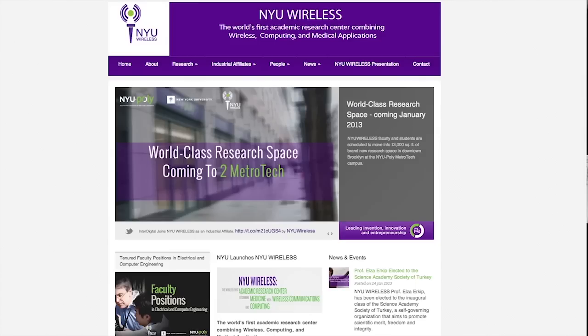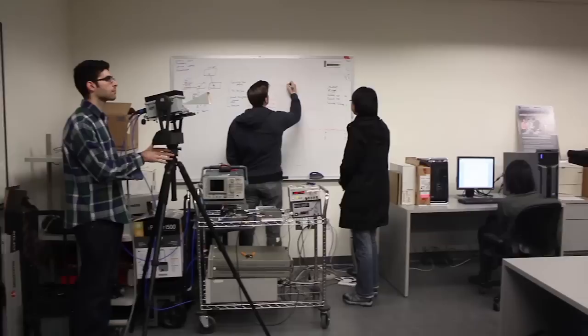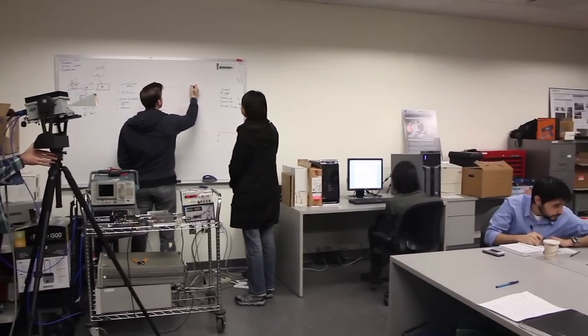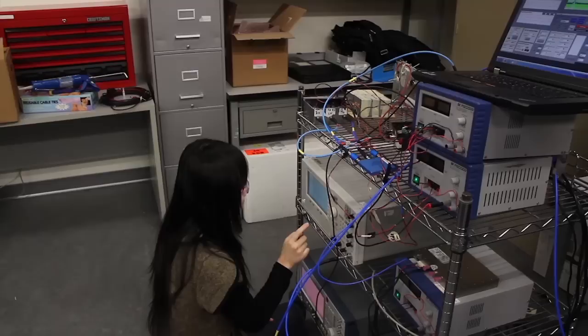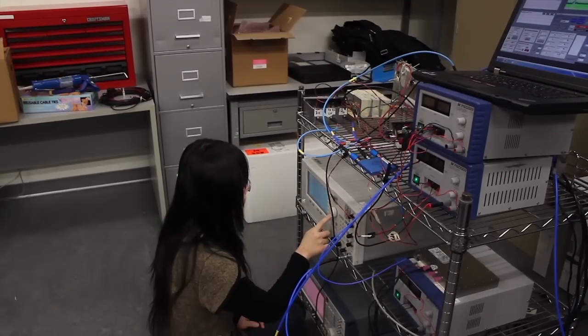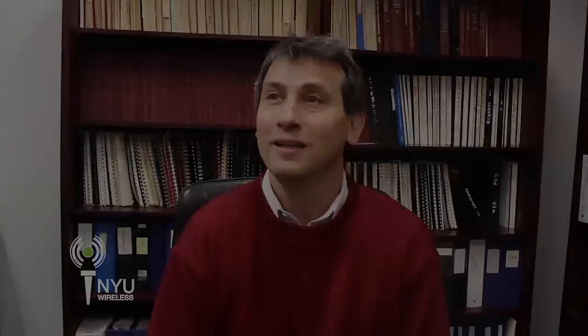NYU Wireless is one of the first academic research centers in the world to characterize the millimeter wave frequencies of 28 GHz and 38 GHz for 5G cellular, fifth generation. And we've performed these measurements in one of the toughest and most densely populated areas in the world, New York City.